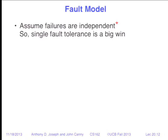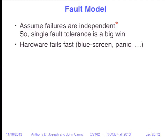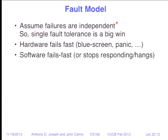The fault model we typically assume for fault tolerance is that faults are independent — note the big red asterisk, because in the real world, faults are often not independent. If you lose power, you're likely to lose air conditioning too, as we discovered at our campus data center. So you have to be careful because everything can be interdependent. Hardware we assume fails fast: if something goes wrong, it blue screens, panics, and stops immediately — it does not silently corrupt data. Same for software: we want software to fail fast, to abort or hang rather than keep going, because if it keeps going it could corrupt data structures along the way.